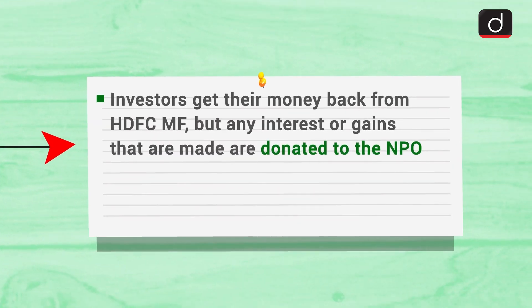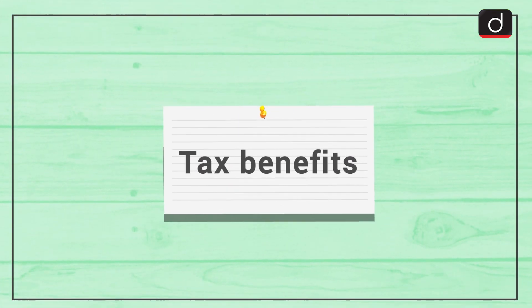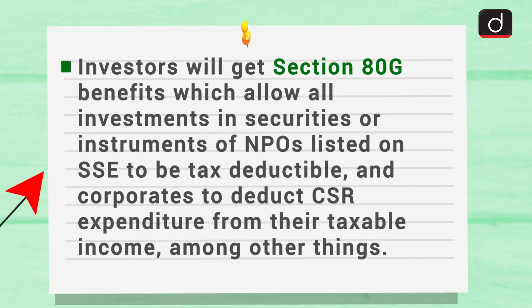Meaning, its investors get their money back from HDFC Mutual Fund, but any interest or gains that are made are donated to the NPO. Investors also get Section 80G benefits, which allow all investments in securities or instruments of NPOs listed on the SSE to be tax deductible, and corporates to deduct CSR expenditure from their taxable income, among others.